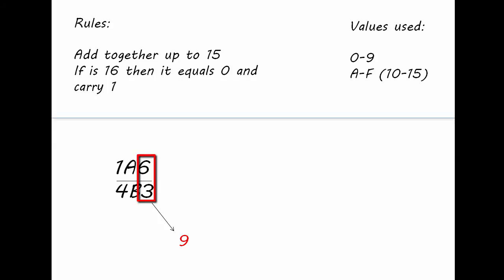We can add the 6 and the 3 together like normal to make 9. Once we get to the next part with A and B, all we do is convert A to 10 and B to 11. Then we can add them together.